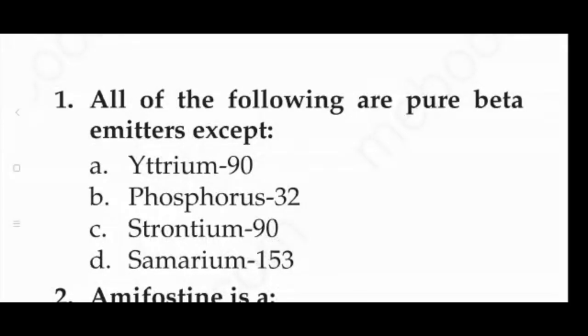Hello friends, welcome to my YouTube channel Universe of Radiology. Today we will discuss some questions on the topic of radiotherapy and chemotherapy. The first question is: all of the following are pure beta emitters except — option A: Yttrium-90, option B: Phosphorus-32, option C: Strontium-90, option D: Samarium-153.